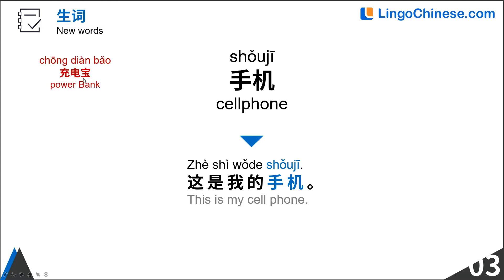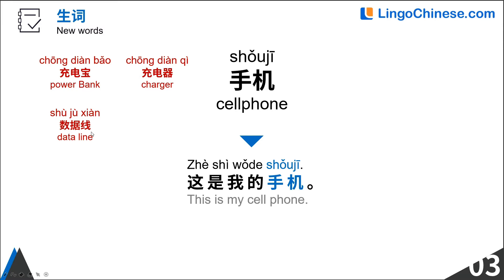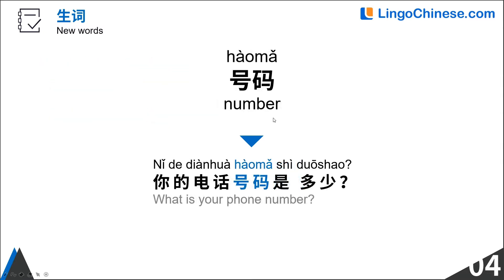Let's add some words related to mobile phones. 充电宝 — power bank. 耳机 — earphone. 号码 — number.